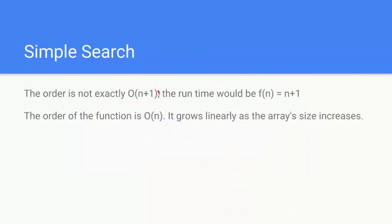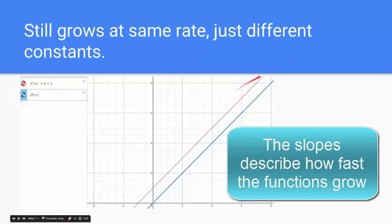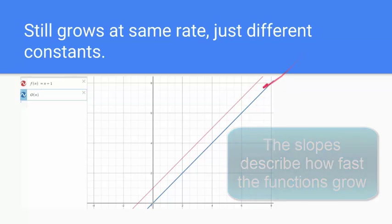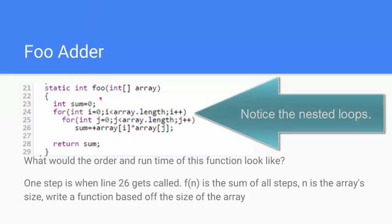Our order of our function is not O of n plus one. It's going to be order of n. It is still growing at a linear rate. Big O is only concerned about the end behavior of the function. They both grow at the same rate, as you can see here. All we really care about is how fast it grows. O of n of this function is still n. Now let's say we have another function.